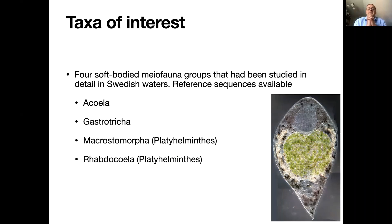For CO1, we BLASTed sequences against GenBank and then used MEGAN for OTU assignments to find putative species. We had a special focus related to the Swedish taxonomy initiative: we wanted to look specifically at four groups of meiofauna organisms where we have been working and where we have reference databases — the acoels, gastrotrichs, macrostomomorphs, which is a subgroup within flatworms, and rhabdocoels, which is another flatworm group — picking them out for a special study because we felt the reference library could allow more in-depth species identification.